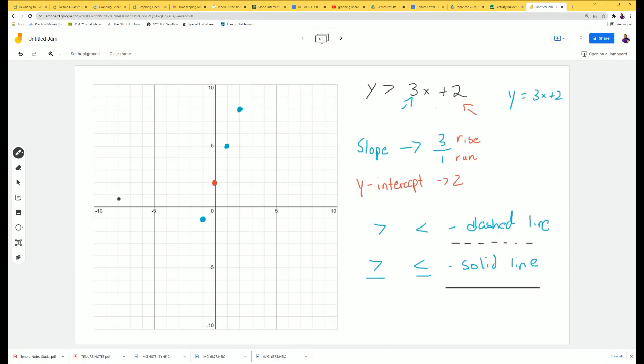Since we have greater than, we're gonna use a dashed line. The same way you would take a ruler, line up your points, and then create this dashed line connecting all of your points.